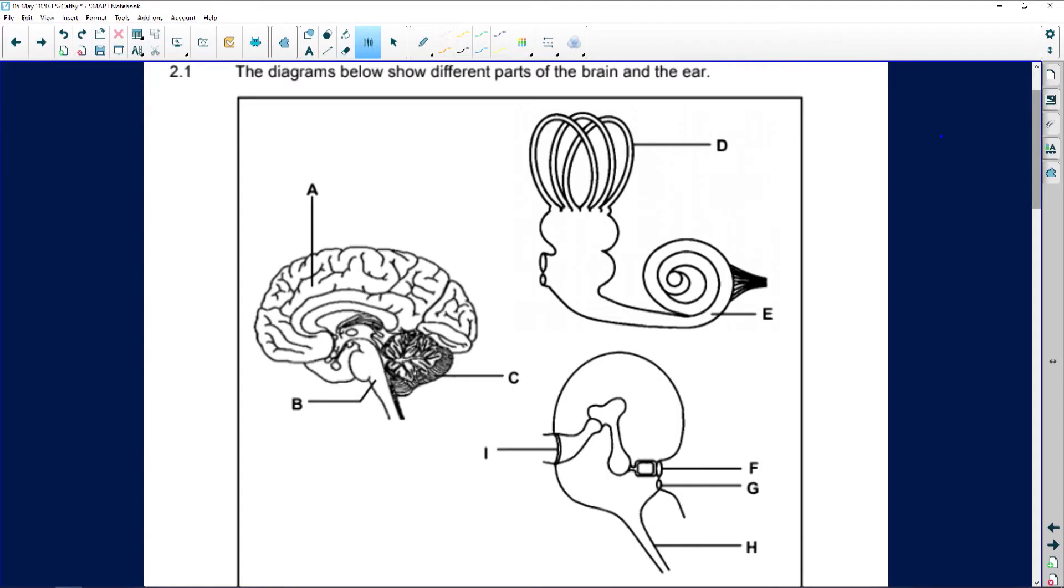Let's start with our question two. So this is section B. These are our long questions now. And it says, the diagram shows the different parts of the brain and the ear.